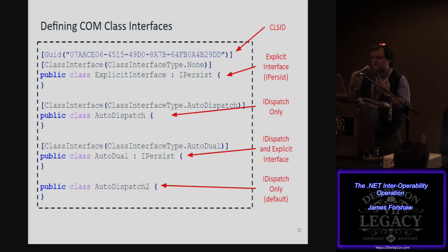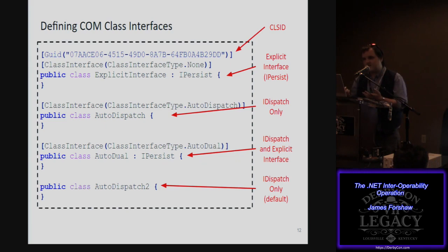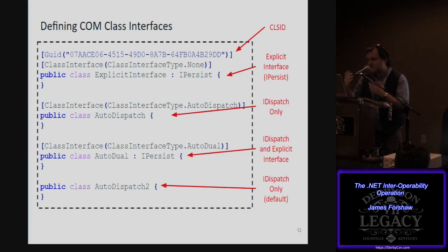There are two main types of COM classes you can expose. You can have an iUnknown-style interface, usually defined by specifying the class interface attribute with a value of none and then specifying an explicit list of COM interfaces you want to implement. Or you can do an iDispatch-based implementation — iDispatch is late binding for COM and allows you to invoke functions by name. The default for a COM class with no annotation is automatically iDispatchable.